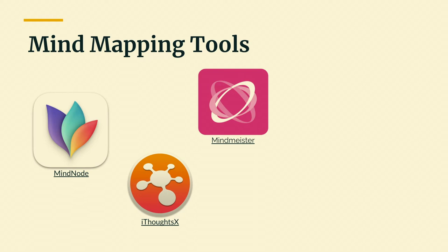MindNode and iThoughts are desktop and mobile tools — they don't have super great sharing, you can export PDF and other formats, but their strong suit is not collaboration. Whereas MindMeister has free accounts and is really good for collaboration — multiple people can be in the system at once and see what each other is doing. And I had a conversation this morning where someone reminded me that Miro is another great tool — you can mind map and do collaborative things in Miro as well.